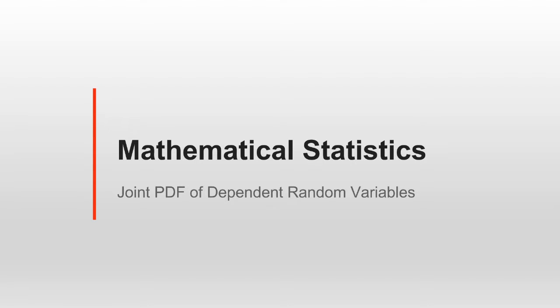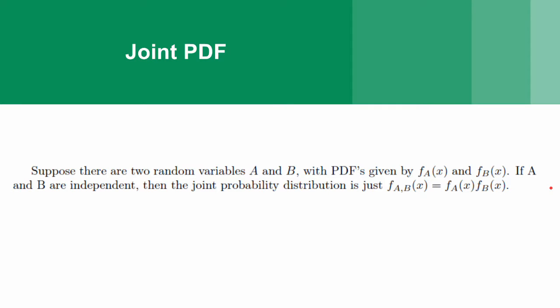Hey, welcome back. My name is Matthew. Today we're going to be doing some mathematical statistics. We're going to be talking about the joint PDF of dependent random variables. Suppose that you have two random variables, a and b, with PDFs given by f sub a and f sub b. When a and b are independent, the joint probability distribution is just the product of the marginal PDFs.